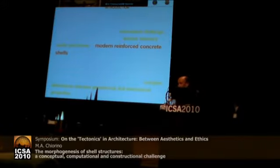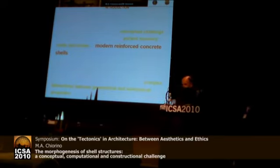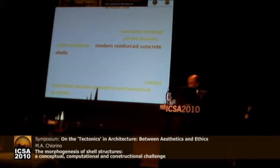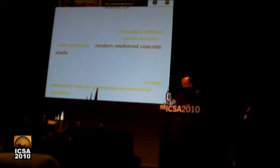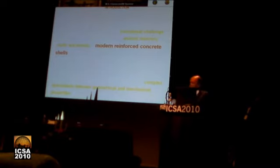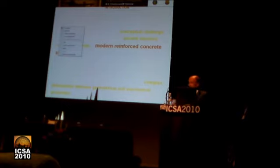In the history of construction, double curvature structures always represented a conceptual challenge for architects and engineers, from ancient masonry poles and domes to modern reinforced concrete shells. Their intrinsic three-dimensional behavior, in terms of stresses and failure mechanisms, can be hardly predicted by intuition, because it relies on the complex interactions between geometrical and mechanical properties.